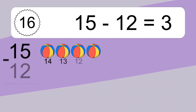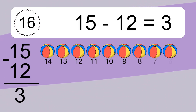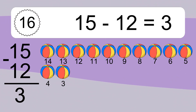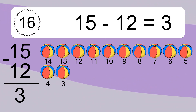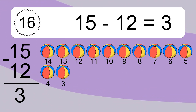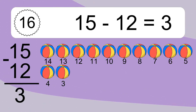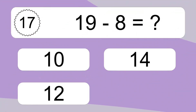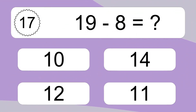15 minus 12 equals what? 15 minus 12 equals 3. Let's count it: 14, 13, 12, 11, 10, 9, 8, 7, 6, 5, 4, 3.